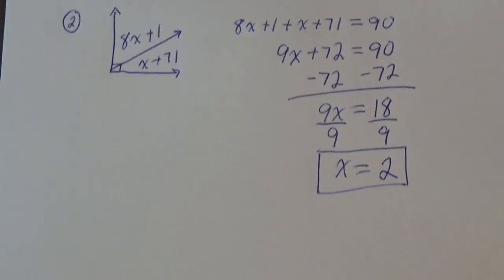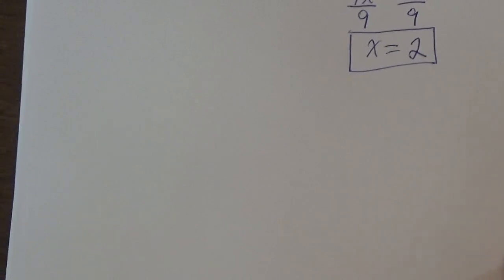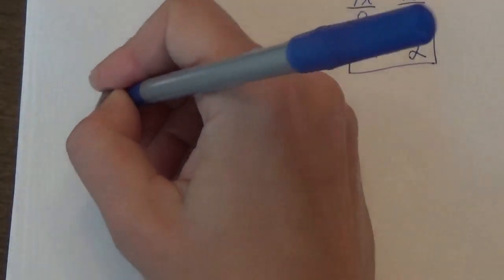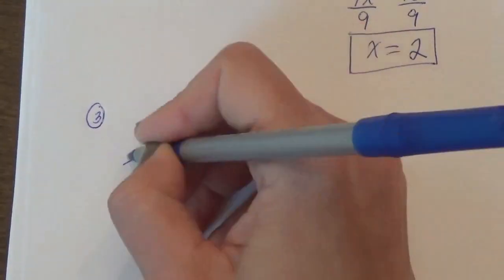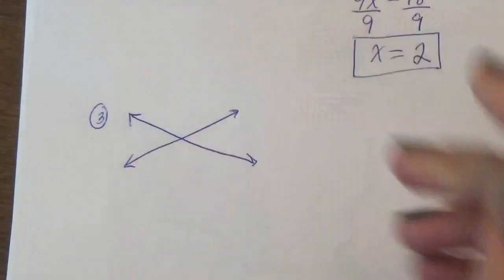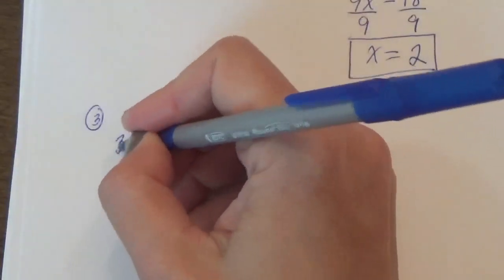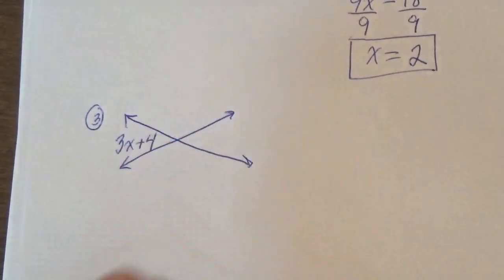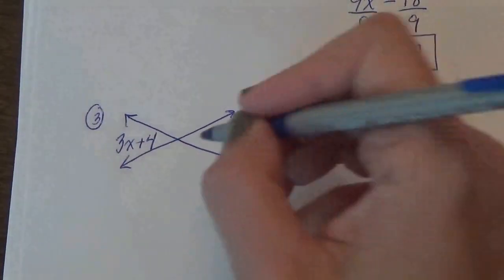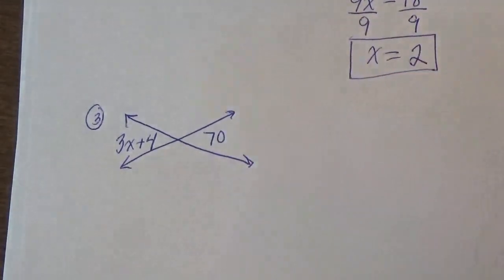And one more. Just to practice here. Let's do another intersecting lines here. And let's see what they give us. This time they're saying this is 3x plus 4. And the one over here is 70.